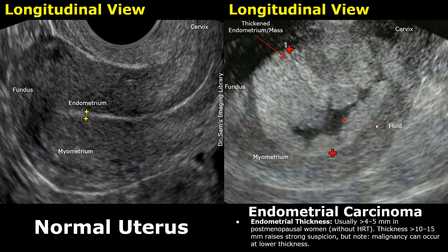Endometrial carcinoma usually occurs in postmenopausal women and the most common clinical presentation is postmenopausal bleeding. On ultrasound, the endometrial thickness is usually greater than 4 to 5 millimeters in postmenopausal women without hormone replacement therapy. If the thickness is greater than 10 to 15 millimeters, it raises a strong suspicion, but keep in mind that malignancy can occur at lower thickness.